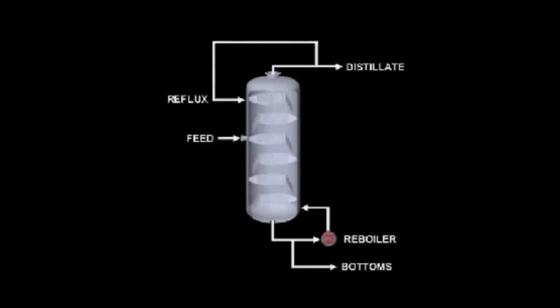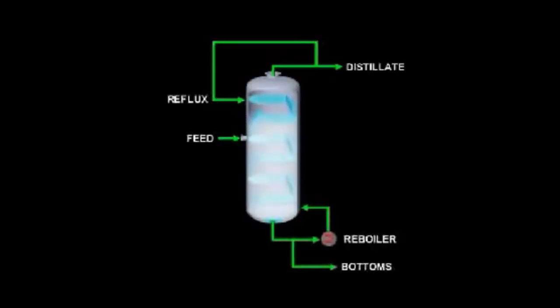What is a packed column? Let's look again at a cross flow tray column. Liquid flows down the column and vapor rises up the column, and above each tray surface the vapor and liquid are mixing.